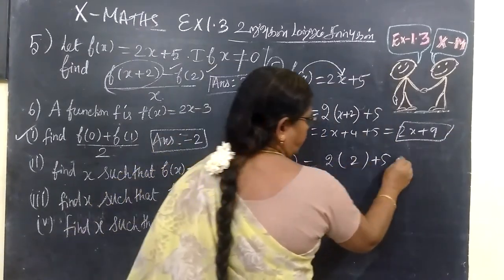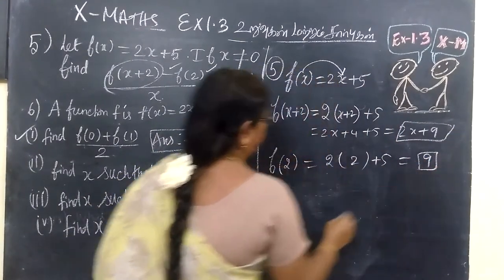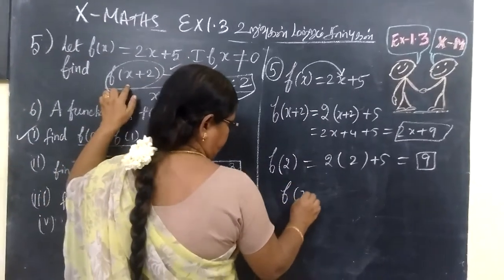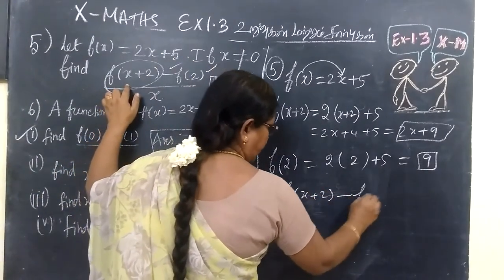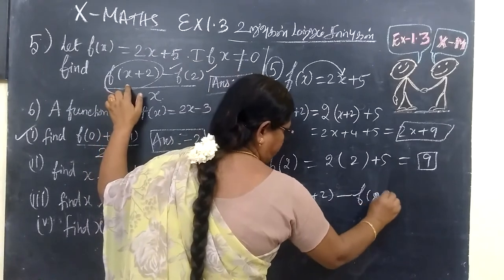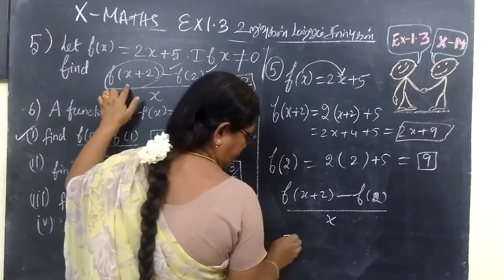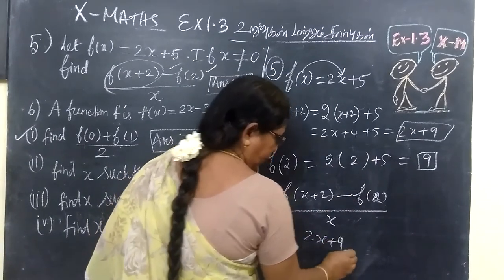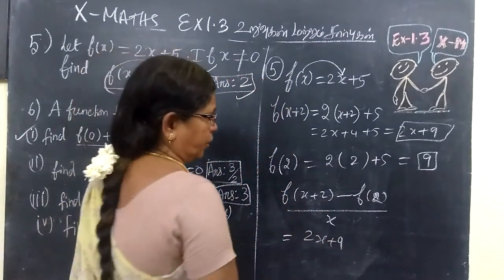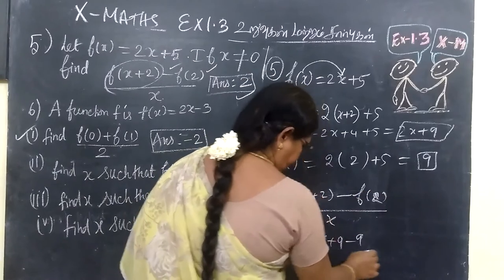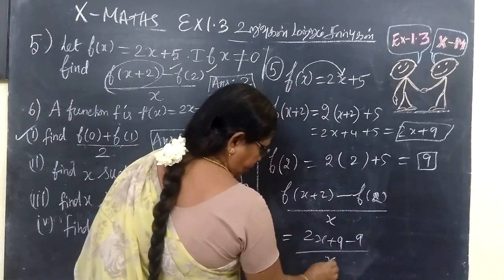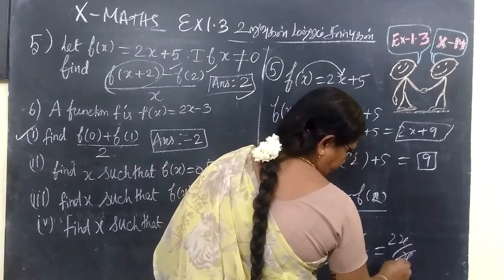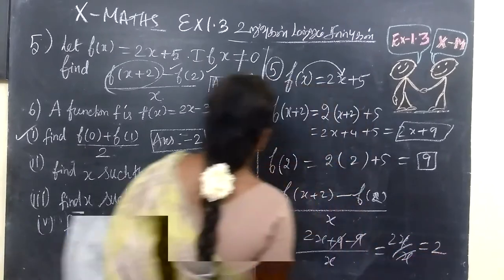For f of 2: 2 twos are 4, plus 5 equals 9. So f of x plus 2 minus f of 2, divided by x. Substituting: (2x plus 9) minus 9, divided by x. The answer is confirmed correct.